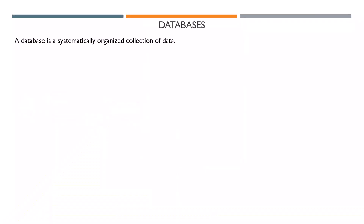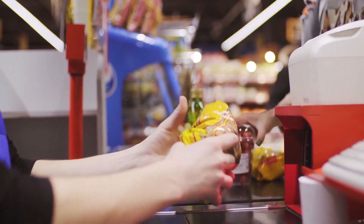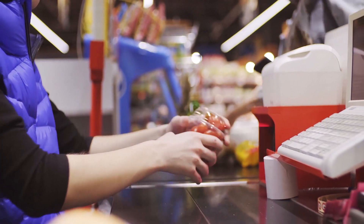So what is a database? A database is a systematically organized collection of data. In every business, there is an operational system — how the business operates and stores its data. For example, when you go to a shopping mall to buy something, the cashier inputs everything you bought into a system. That system holds a systematically organized collection of data — that's a database.